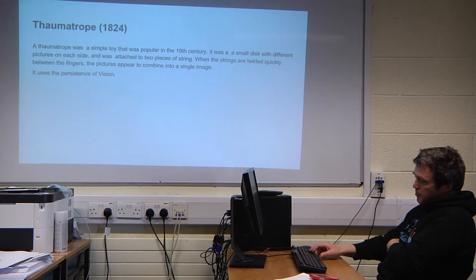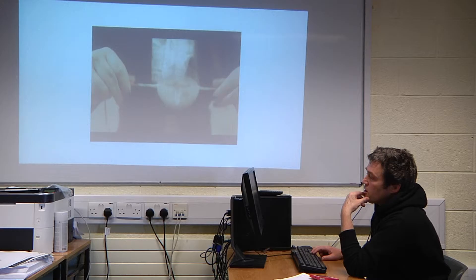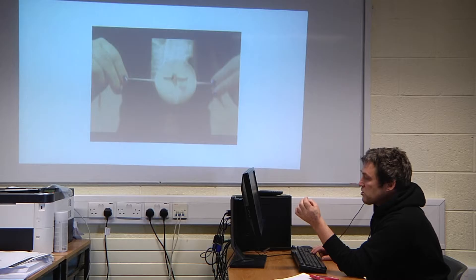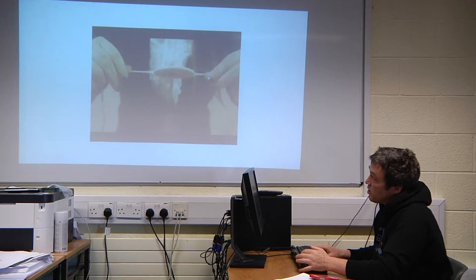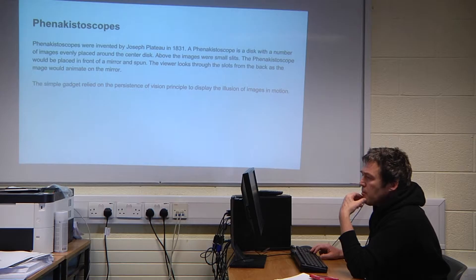The thaumatrope was a simple toy popular in the 19th century — basically a disc that you'd flick between two strings to show movement. Interestingly, in the caves in France they actually found a disc showing an animal, and when flicked it showed movement, dating back 35,000 years. That civilisation was well ahead of their time.